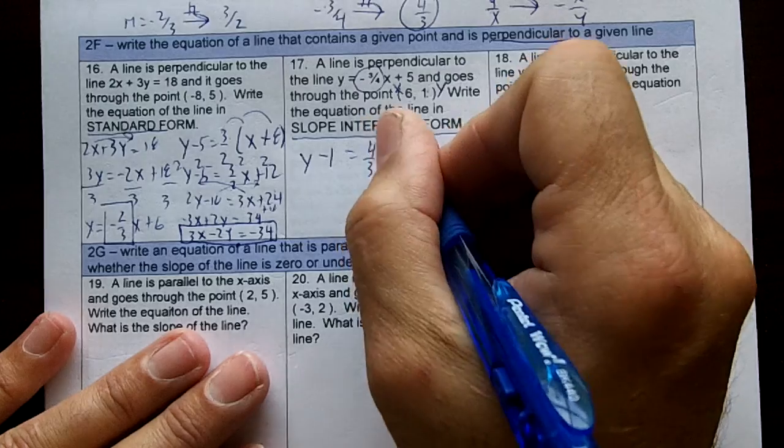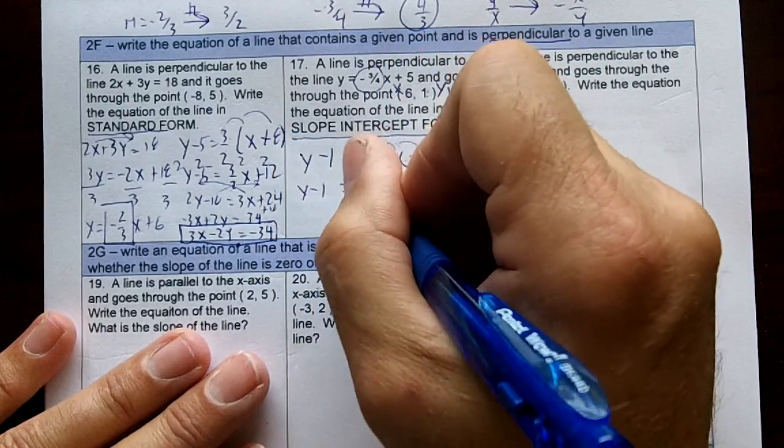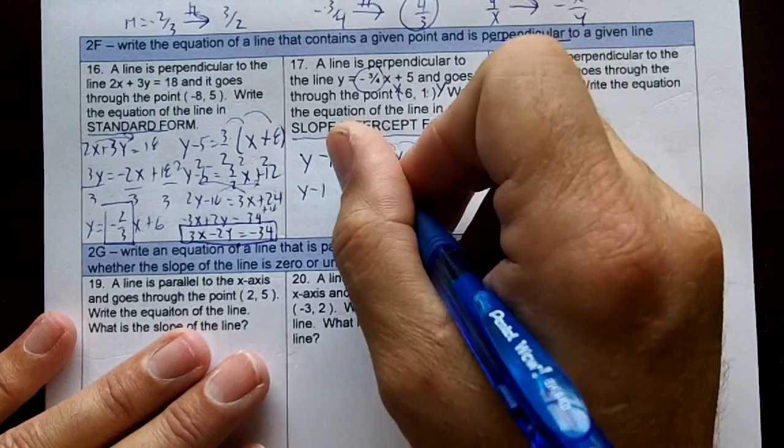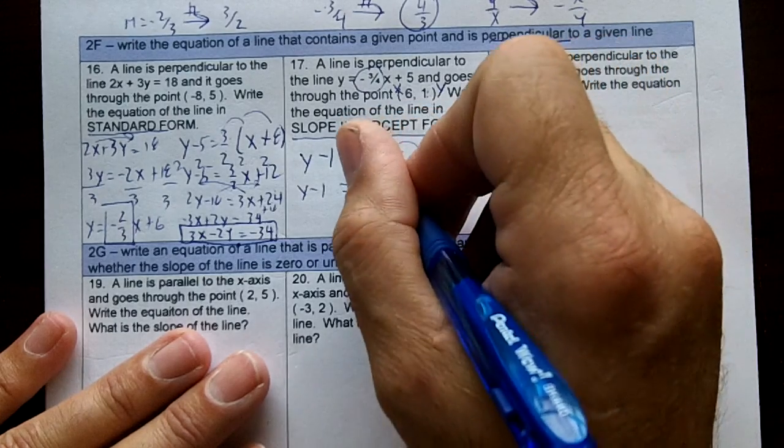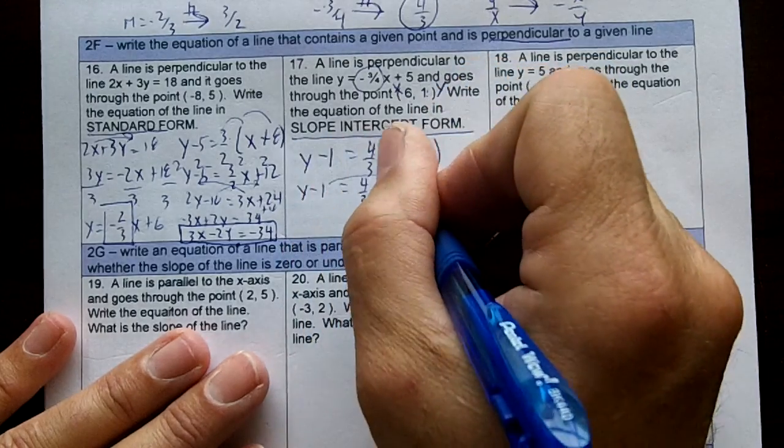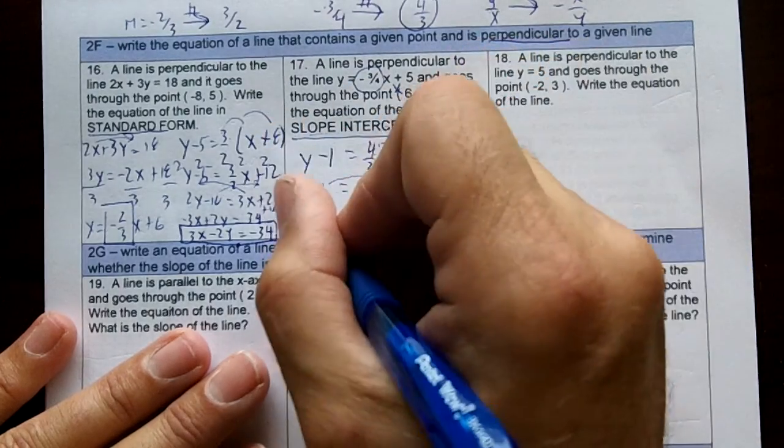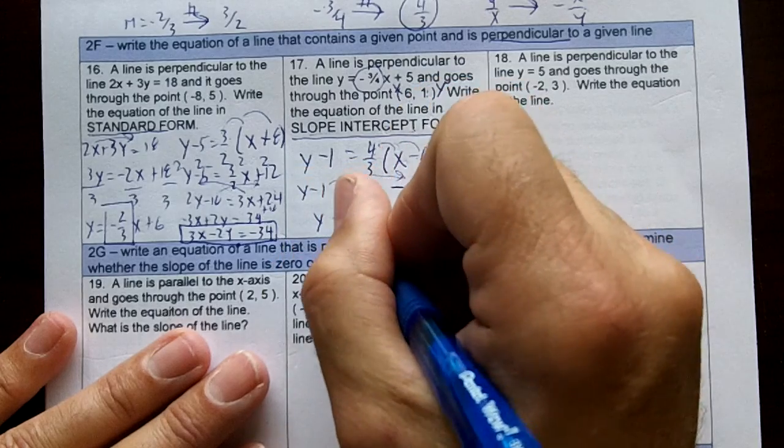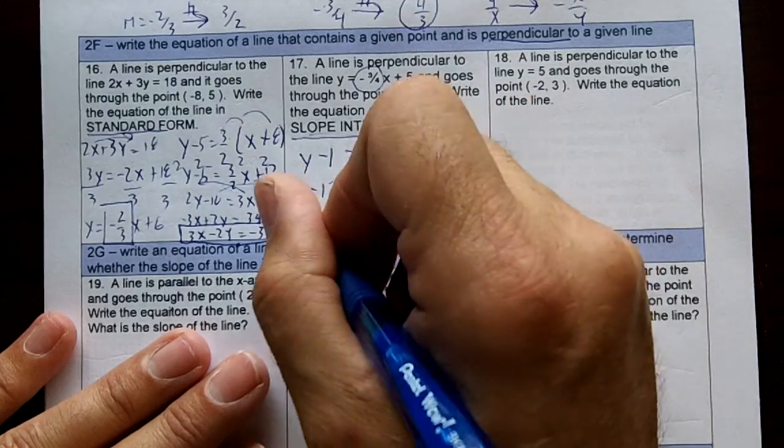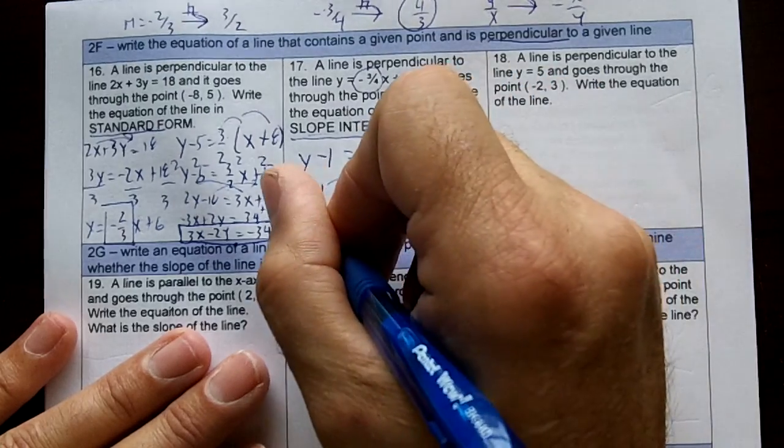Now then I'm going to distribute my 4 over 3, so y minus 1 equals 4 over 3x. A positive times a negative is a negative. 4 times 6 is 24. 24 divided by 3 is 8. And now then I need to move the 1 over, because I want it in slope intercept form. So y equals 4 over 3x. The opposite of minus 1 is a plus 1, and I'm going to get negative 7. That's the answer.